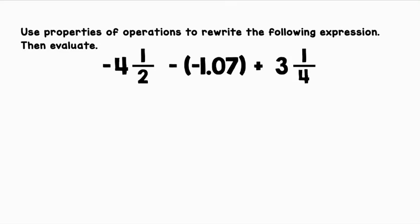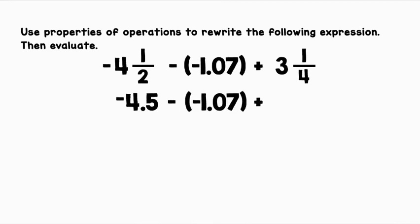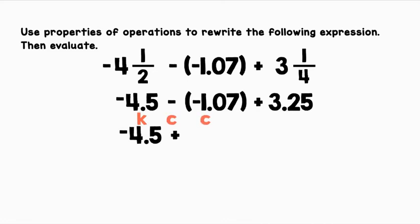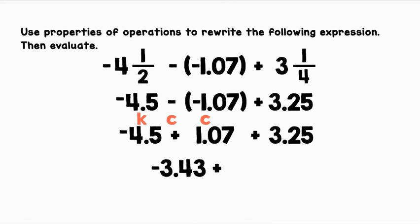Use properties of operations to rewrite the following expression, then evaluate: negative 4 and one half minus negative 1.07 plus 3 and one fourth. First, let's convert all of our rational numbers to the same form. I'm going to convert the fractions to decimal form. Negative 4 and one half as a decimal is negative 4.5. 3 and one fourth as a decimal is 3.25. Now let's evaluate from left to right. I'm going to use the additive inverse: keep negative 4.5, change subtraction to addition, and change negative 1.07 to positive 1.07. Negative 4.5 plus positive 1.07 is negative 3.43. That plus 3.25 equals negative 0.18.